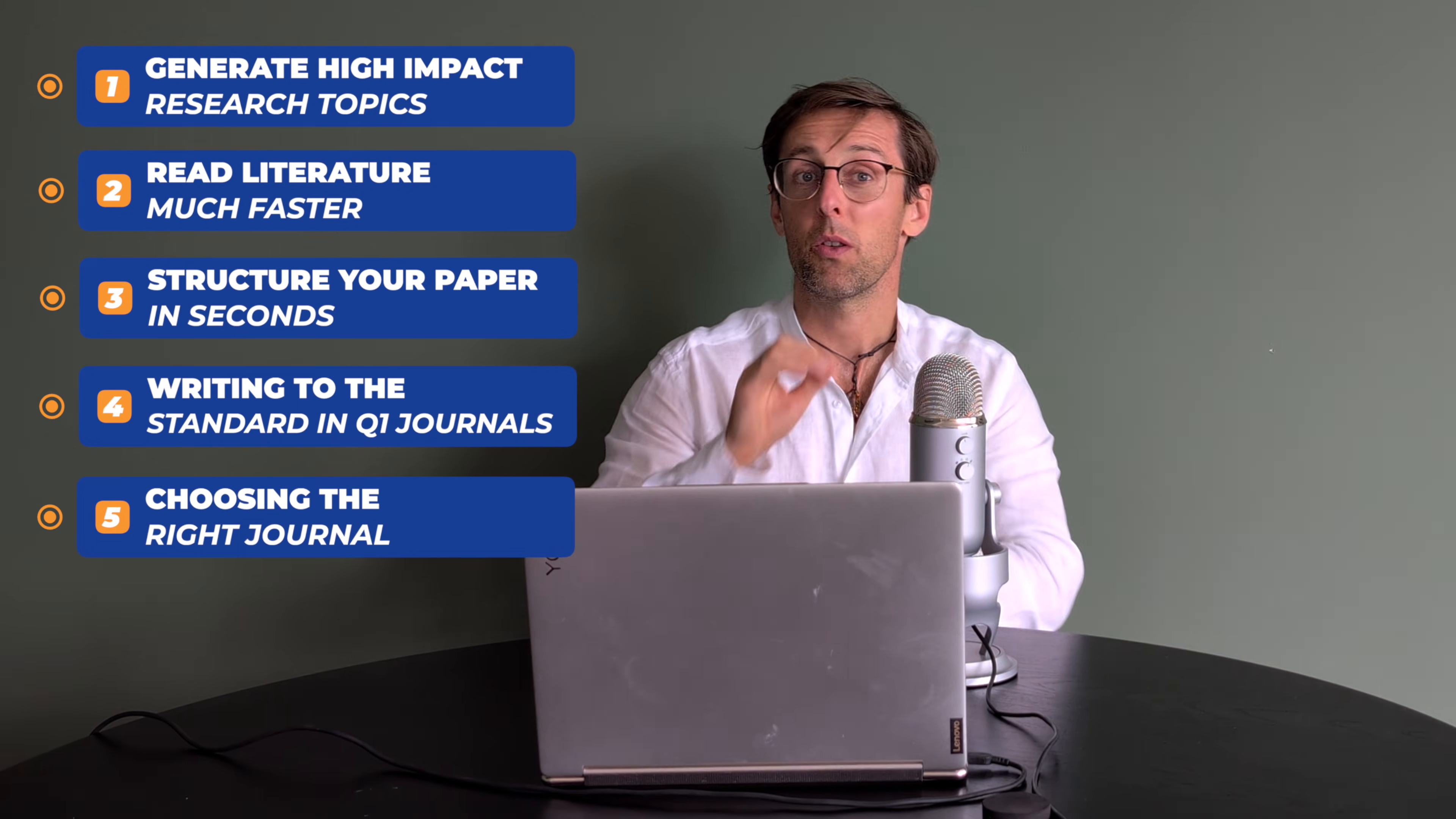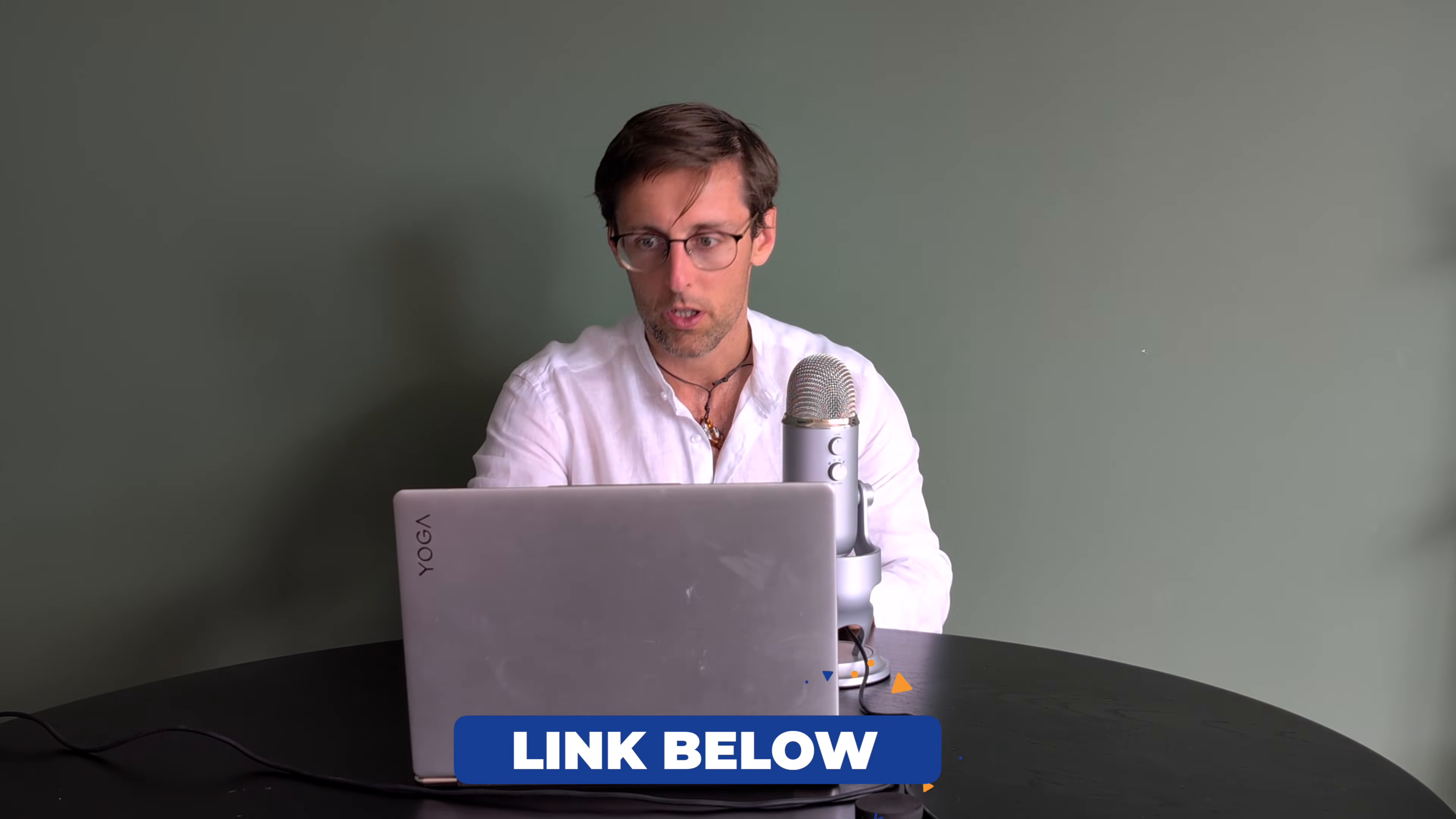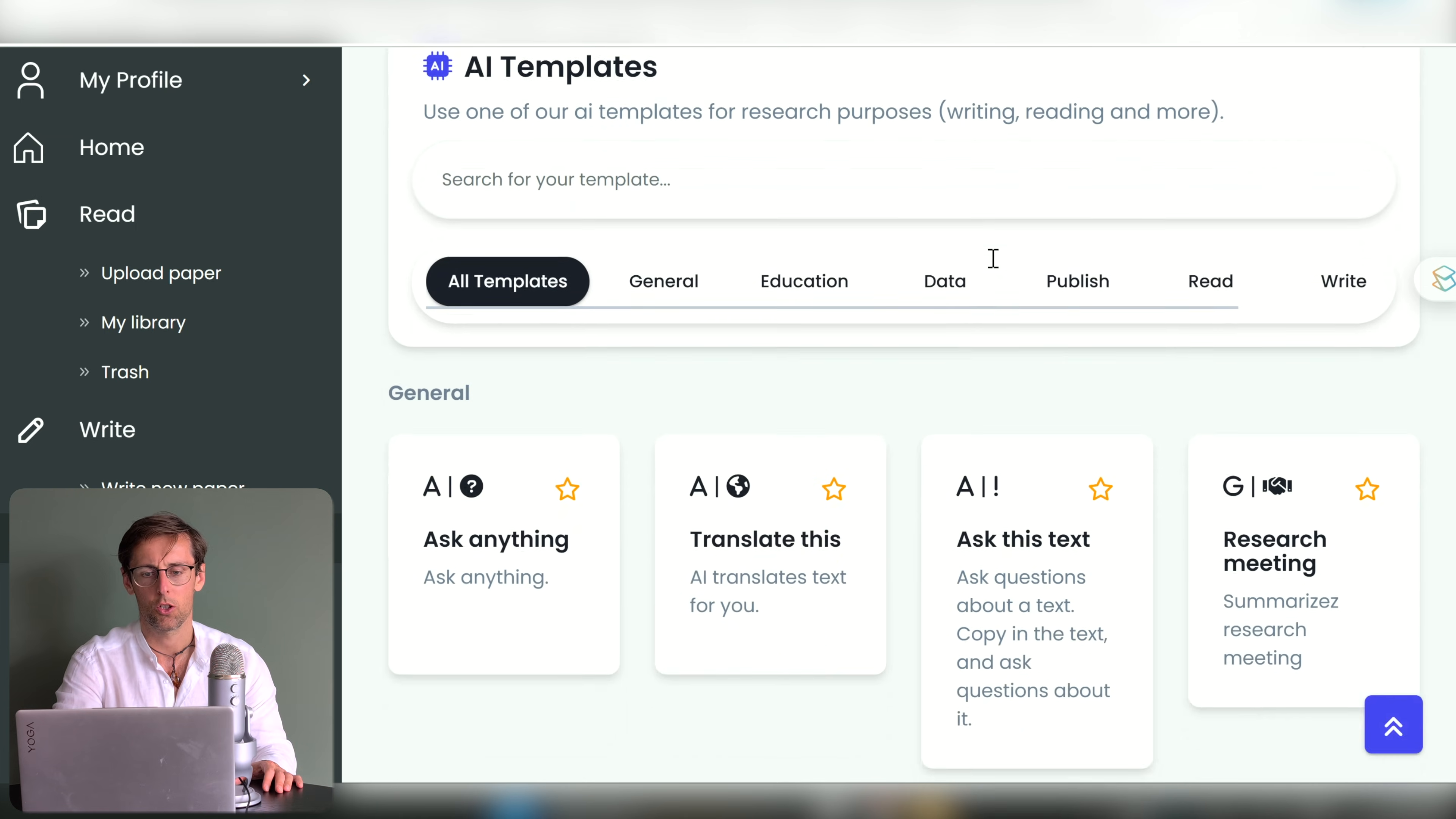First up is what I think is the best all-in-one AI research tool for researchers or PhD students and it's called AvidNote. You can start using it for free, the link is in the description, there's also a discount code for the paid version. So I'm just going to log in. Why do I think it's the best all-in-one research tool? Well because it can literally help you to do everything you need to be doing on a daily basis as a researcher or PhD student.